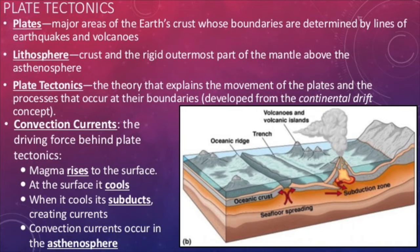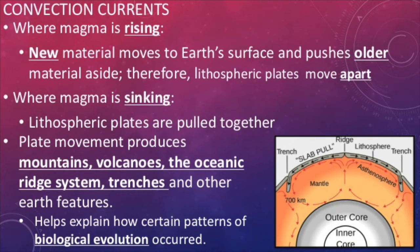The interior of the earth is extremely warm. This warmth from the core heats up the lower mantle. The warmer magma flows upwards and towards the surface. It pushes along the tectonic plates like a conveyor belt and causes the plates to move with it. Crust is constantly being recycled as a result. Where magma is rising in the mantle, new material moves to earth's surface and new crust is created. As the new crust forms, the older crust is pushed aside and the plates move apart from one another.